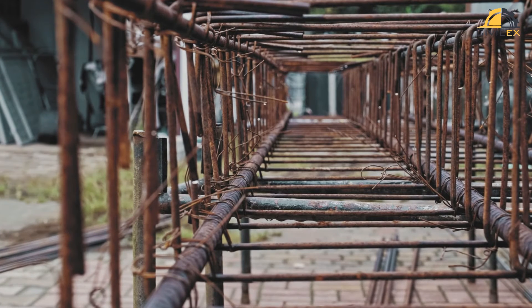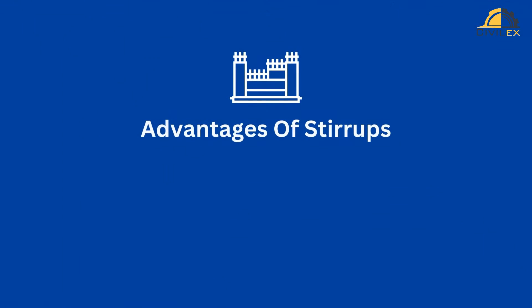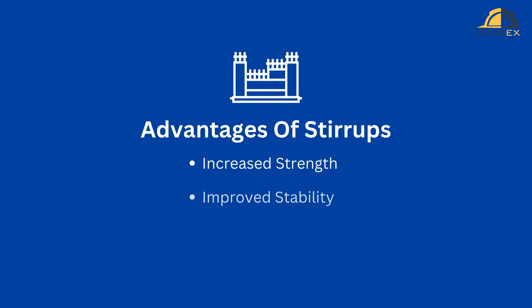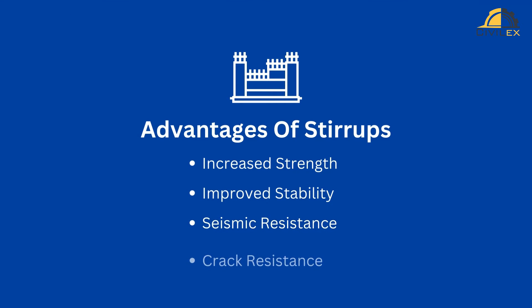The proper design and installation of stirrups are essential to ensure the strength and stability of the structure. Using stirrups in reinforced concrete construction offers a myriad of advantages: increased strength, improved stability, enhanced seismic resistance, and superior crack resistance are among the key benefits.